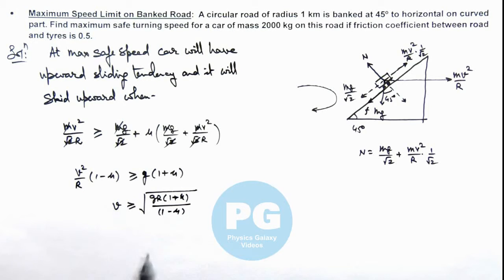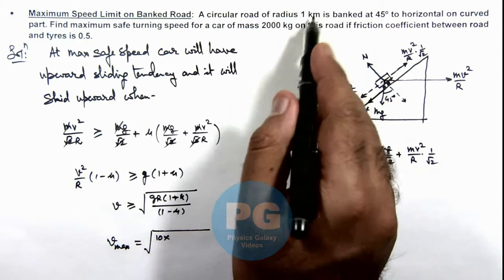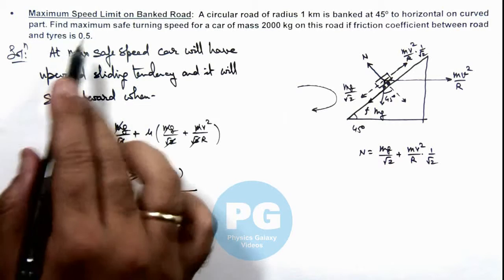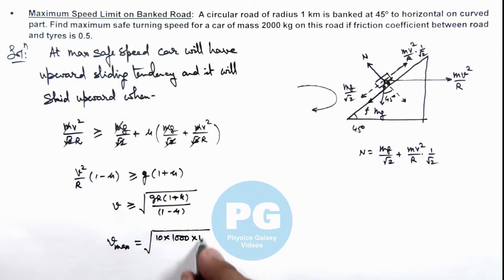So if speed exceeds this value then it'll skid up so this would be the maximum safe turning speed. So v max can be written as equal to root of g is 10, r is 1000 meters, mu is 0.5 so this will be 1.5 divided by 0.5. Simplifying this gives us the value hundred root 3 meters per second which is the result of this problem.